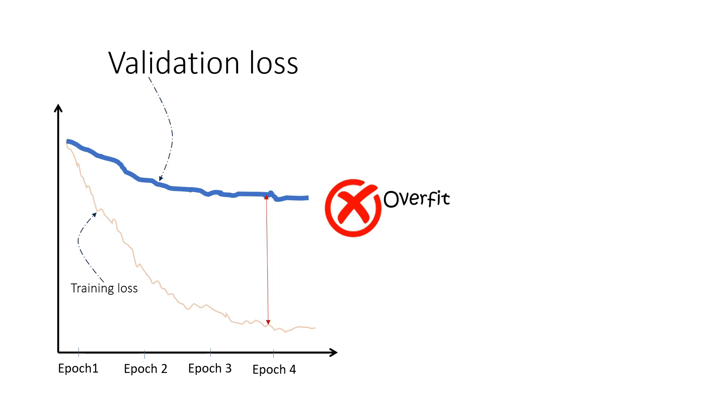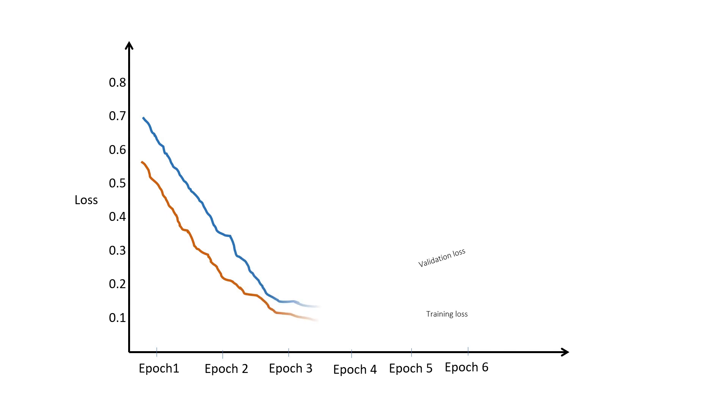Till now we saw examples where a single model is either overfit or underfit. But in real life, we see examples where a model starts being underfit and then goes on to become overfit. In these cases, we use something known as early stopping.